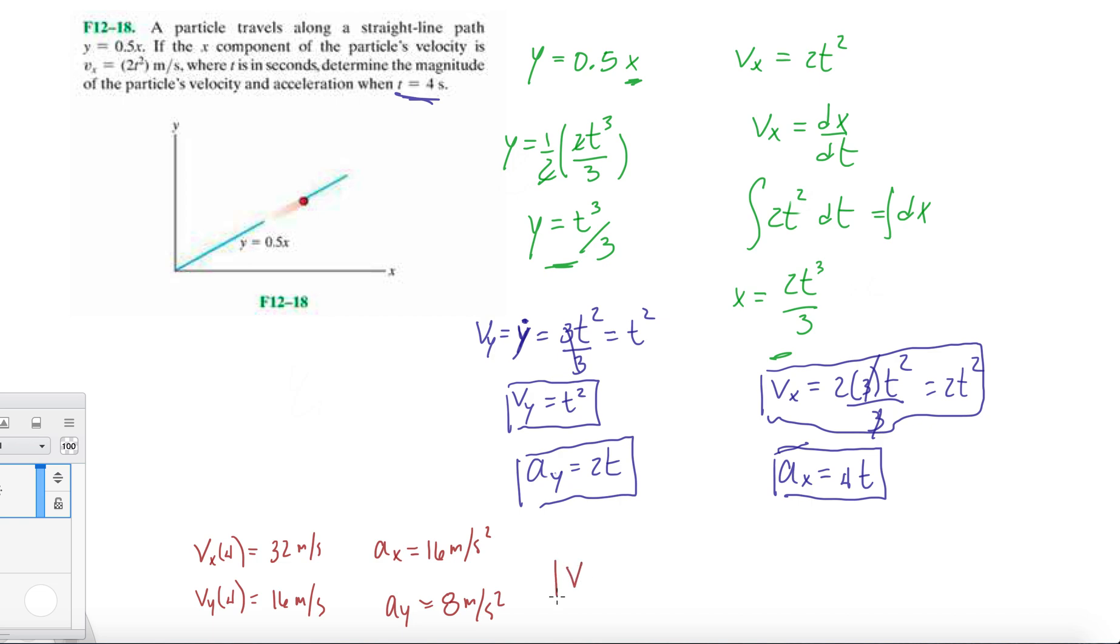To get the magnitude we'll square each term. So that's 32² + 16², which is equal to 35.8-ish meters per second.